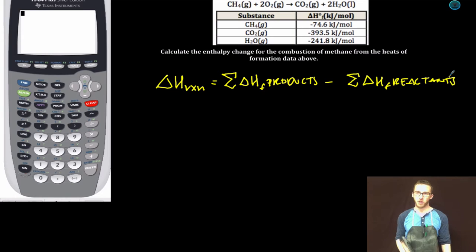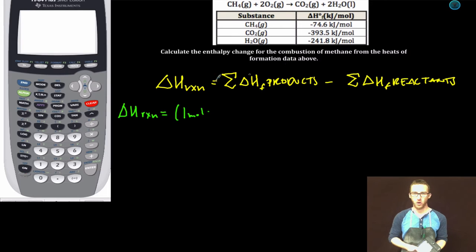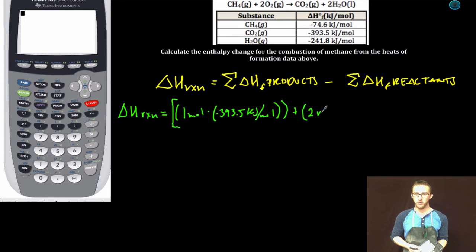So take a look at my equation. I've got one mole of CO2 and its enthalpy of formation is negative 393.5 kilojoules per mole. We're going to add to that the heat of formation for two moles of water. I've summed together the heats of formation of my products.